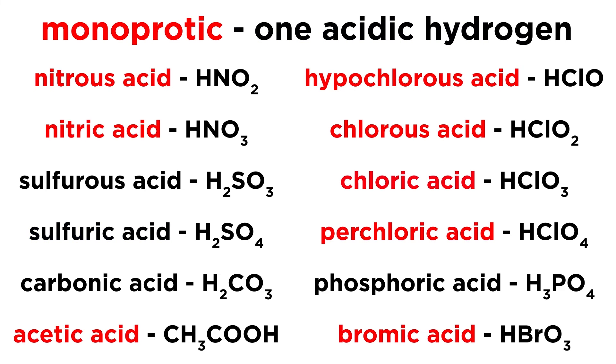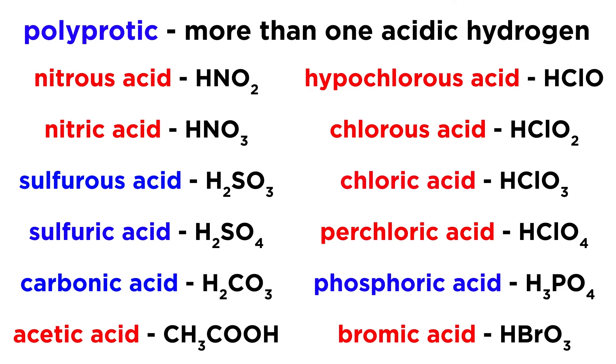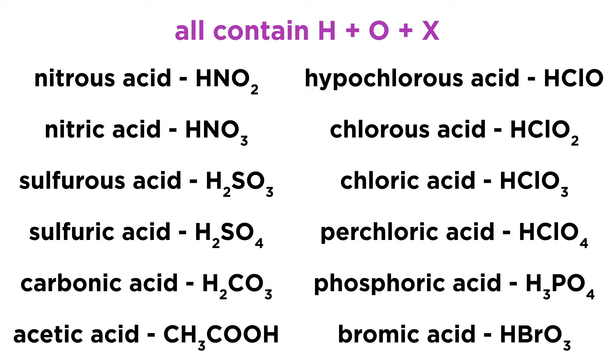Some of these oxyacids are monoprotic, and some are polyprotic, but all contain hydrogen, oxygen, and at least one other element. And now that's a few more molecules that we know how to name. Let's check comprehension.